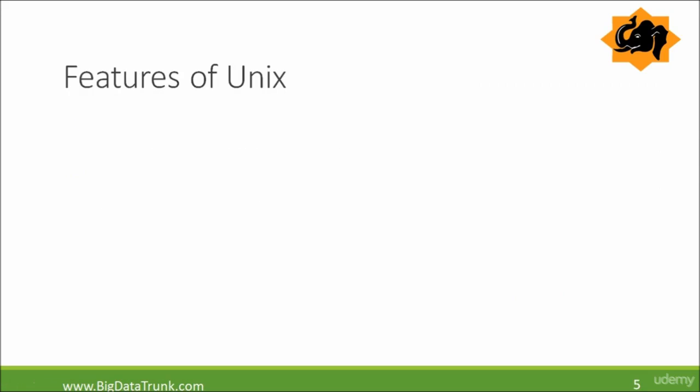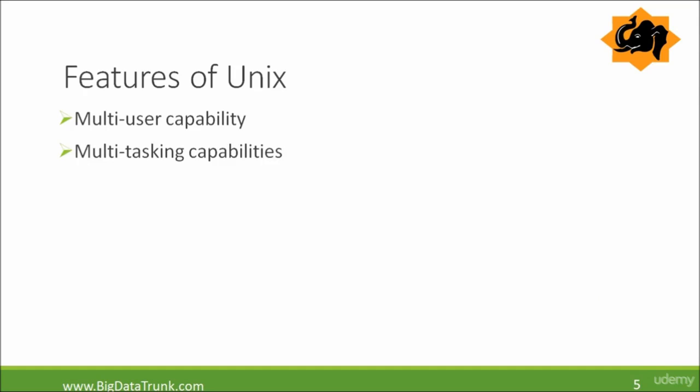Now let's talk about some of the good features Unix has. Multi-user capability: a multi-user operating system means many users can log in to the system at the same time. Multitasking capability: Unix is multitasking because you can perform more than one job at the same time. For example, you can execute a command for sorting a huge list, simultaneously type in Notepad, and also listen to music — performing multiple tasks at the same time, just as you do in Windows.